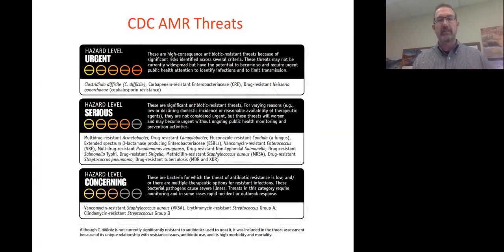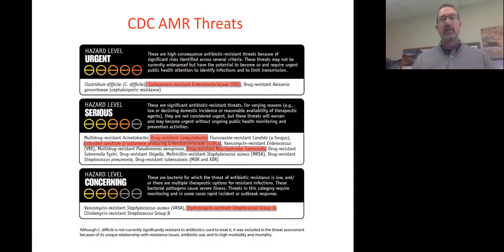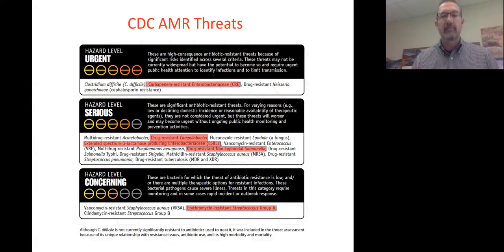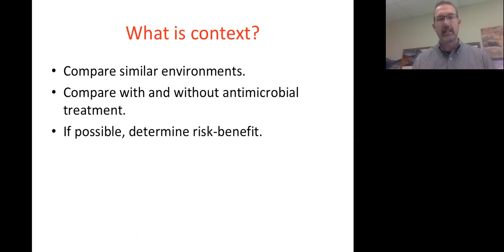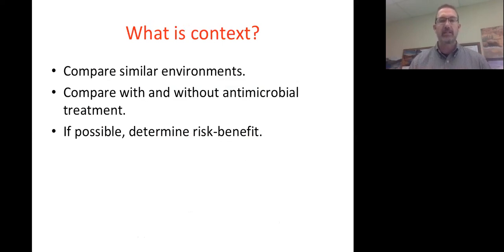The second consideration is whether the resistance is in a pathogen that will cause human health issues, or in a commensal organism used as an indicator. It's easier to measure commensals, so on the right side of the spectrum you have very serious resistance possibly in a pathogen — very detrimental — while on the left you have resistance in a commensal that isn't going to cause human health issues. The CDC threat list highlights very few that could actually come from animal agriculture.